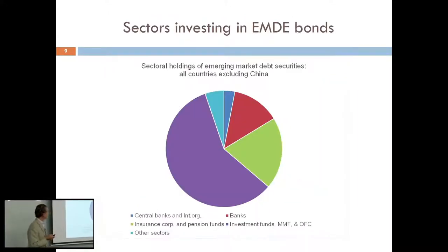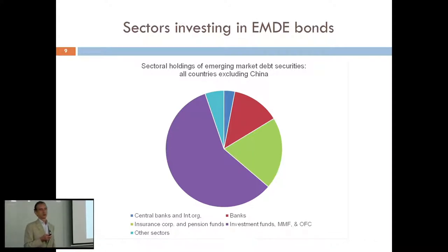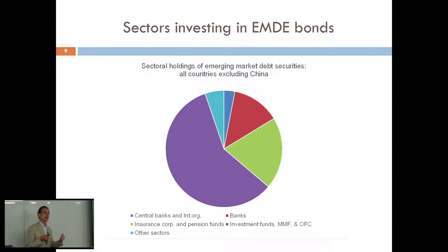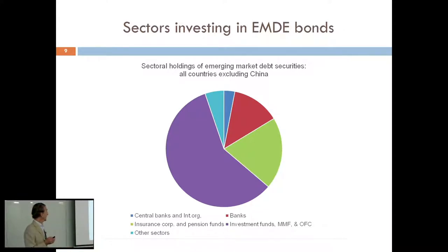This is a sectoral picture for all countries excluding China. A lot of the money comes from investment funds, which makes it trickier to identify patterns depending on who the investor is, because investment funds are intermediaries and you cannot firmly establish who is behind them. But we can do that to some extent for the European data. The second biggest component is institutional investors like insurance companies and pension funds. Incidentally, insurance companies and pension funds also invest through investment funds, so their actual weight is much larger than the direct figure.